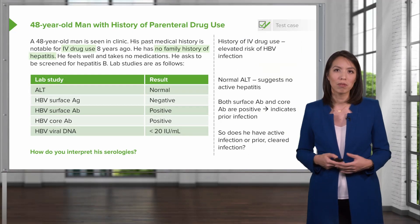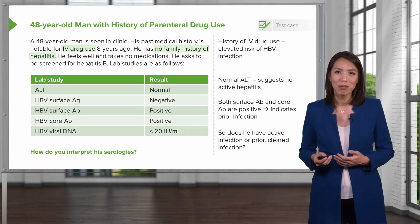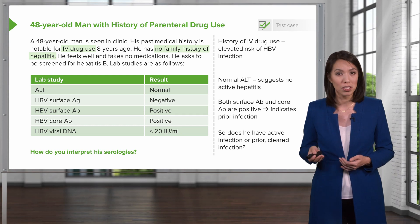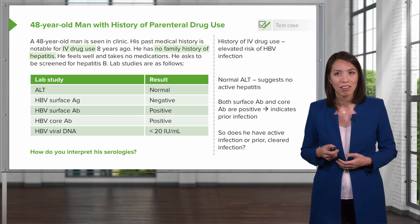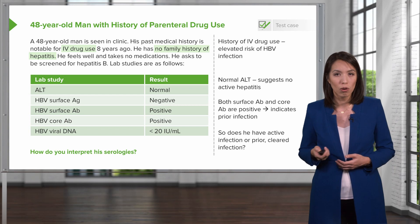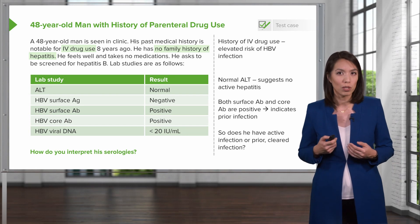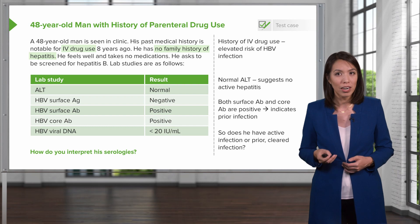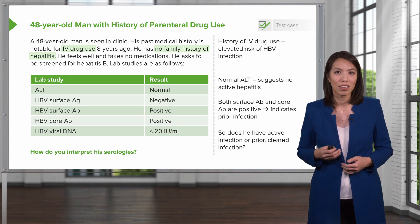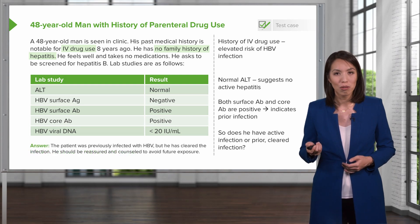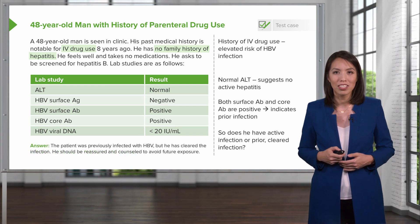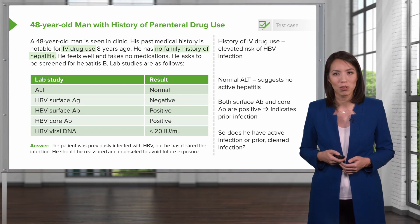Returning to our case: the 48-year-old man with a history of IV drug use has a normal ALT suggesting no active hepatitis, and his positive surface antibody and core antibody indicate prior infection with developed immunity. He most likely had a prior infection, has now developed immunity, and should be reassured and counseled to avoid future exposure.